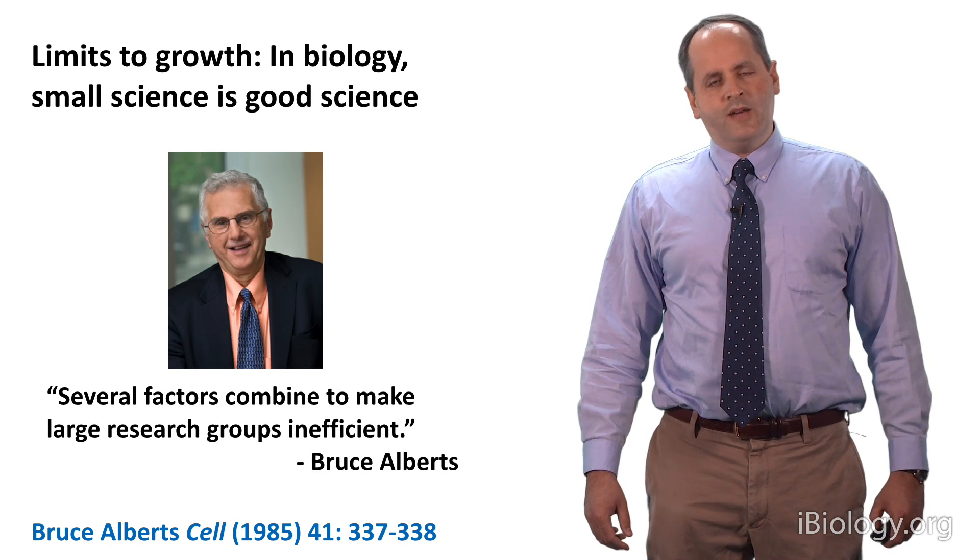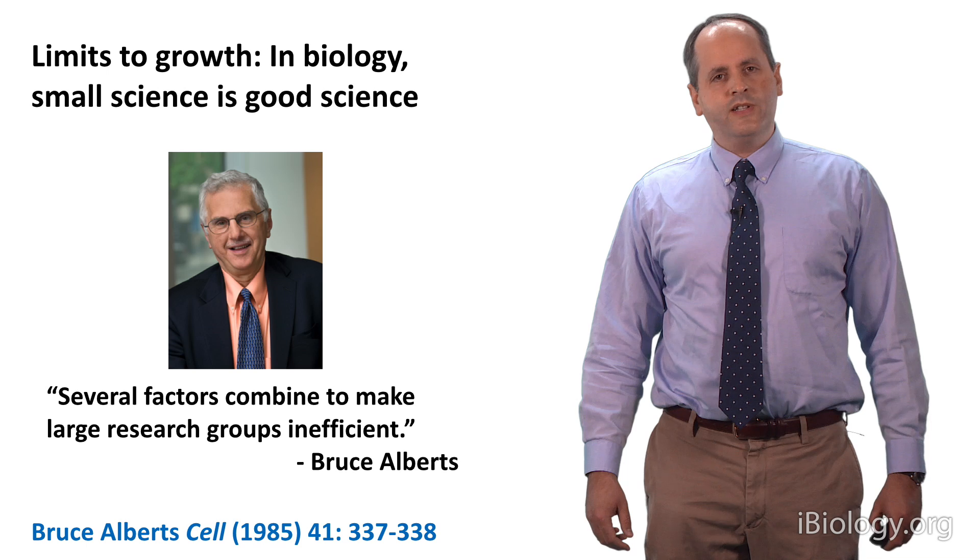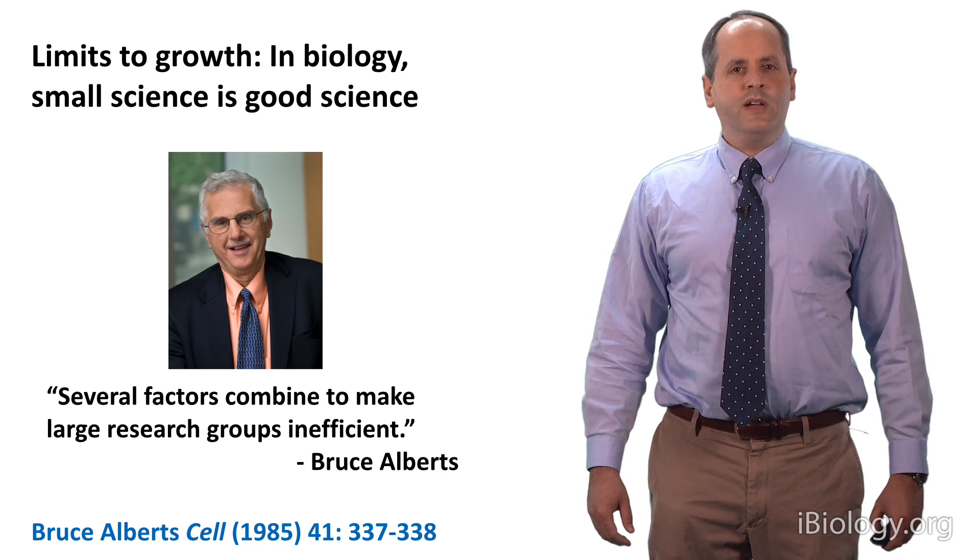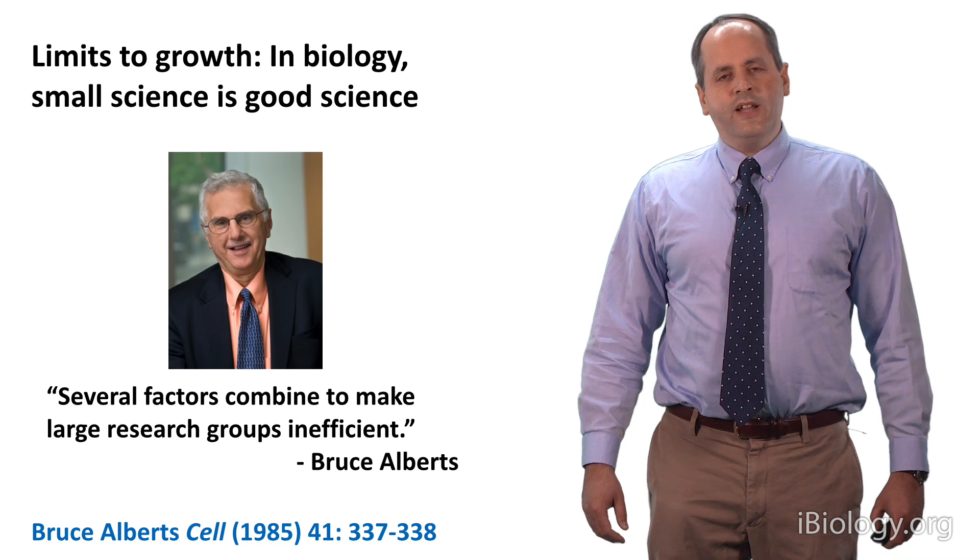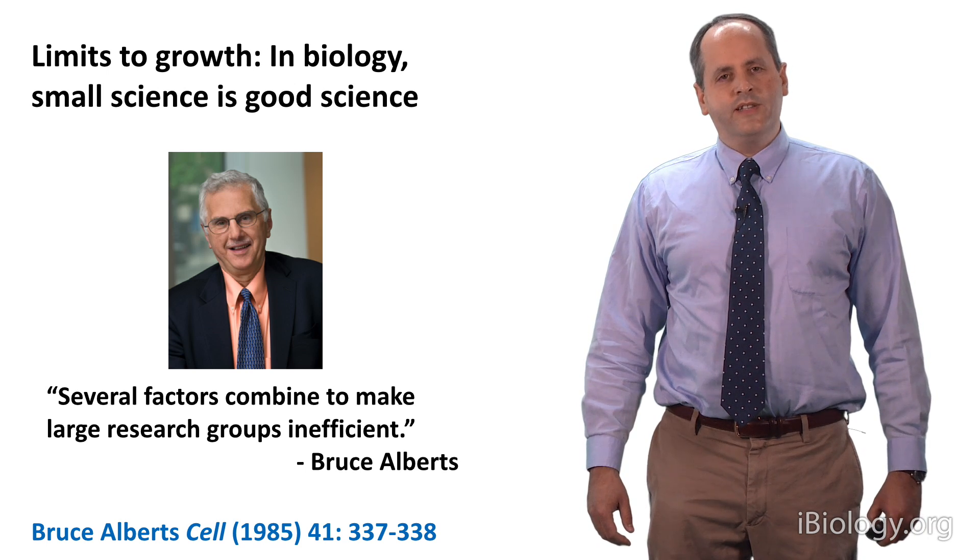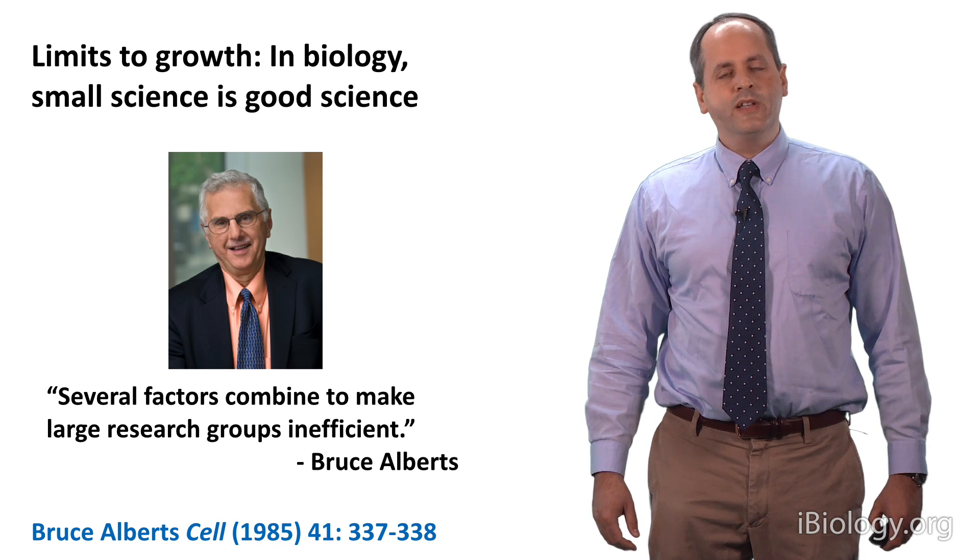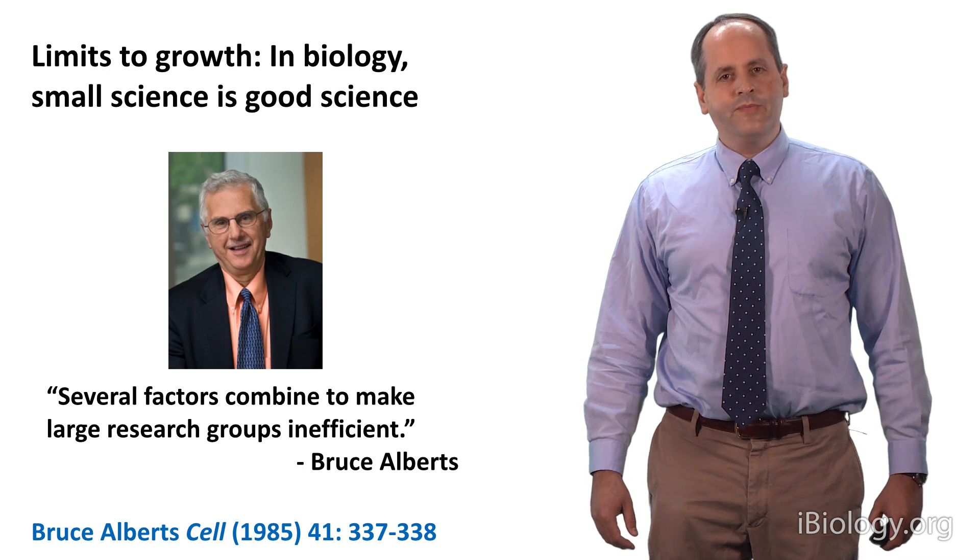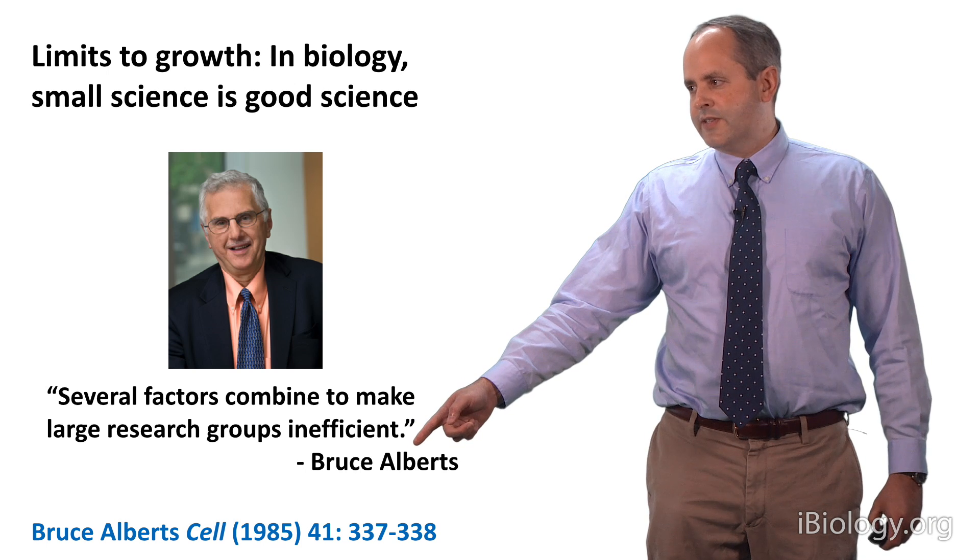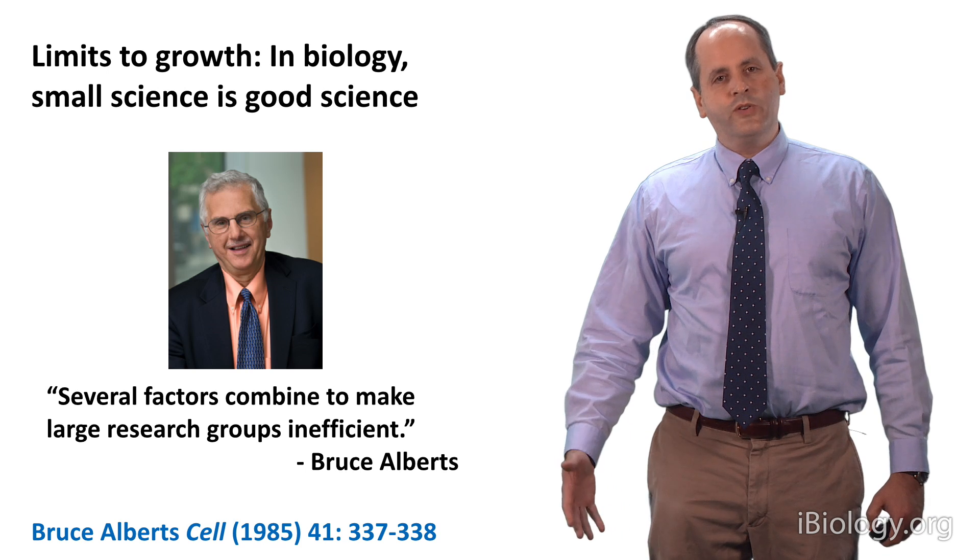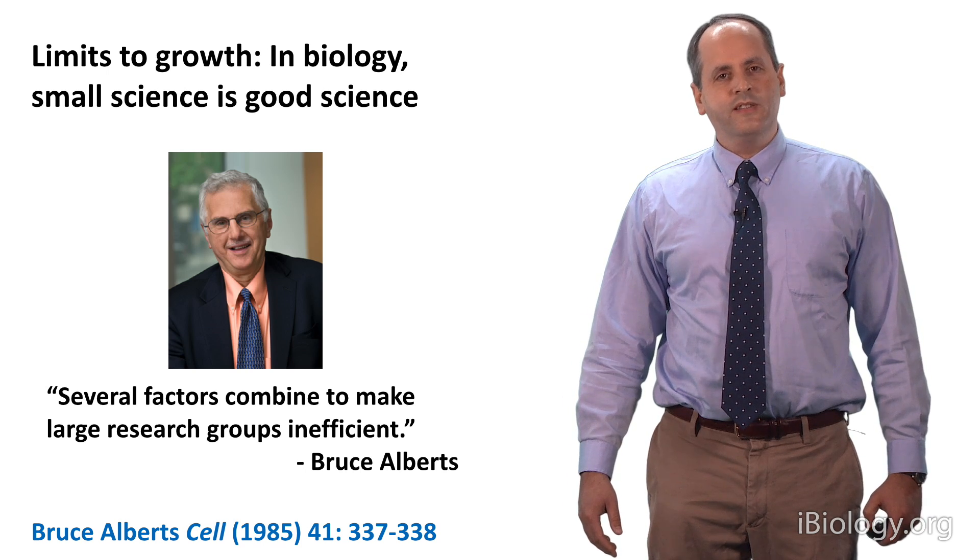So in 1985, Bruce Alberts wrote what I think is a very important and prescient article called Limits to Growth in Biology, Small Science is Good Science. I think this is a paper that really everyone should read today, because it's as important, if not more so, in the current climate than it was in 1985. Bruce's central thesis was that several factors combine to make large research groups inefficient, and I want to address this question in some detail today.